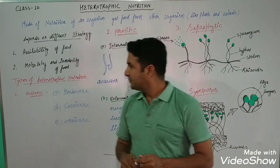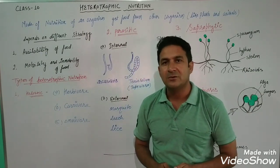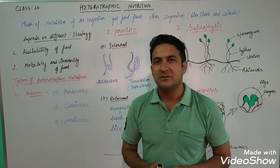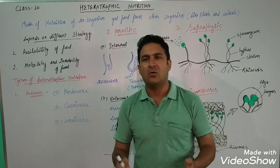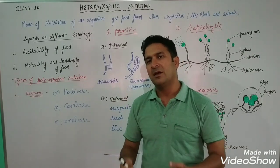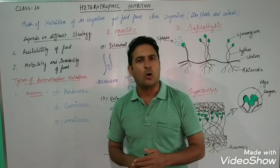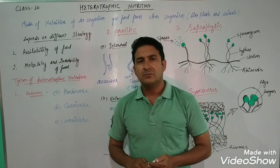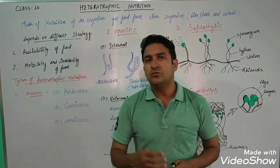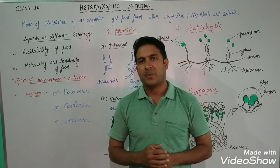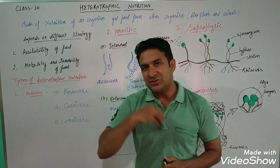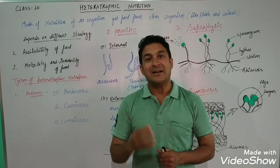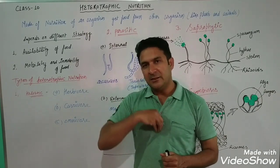First, we will discuss the holozoic mode of nutrition. This mode is followed by many animals you know very well, like cow, tiger, dog, human, bear, and any familiar animal. In this mode of nutrition, animals use mainly five steps. The first is ingestion — taking food into the body is called ingestion. Then the second is digestion, when the food present inside the body is digested.